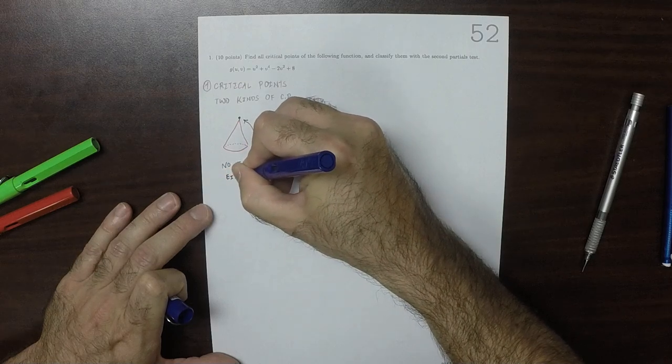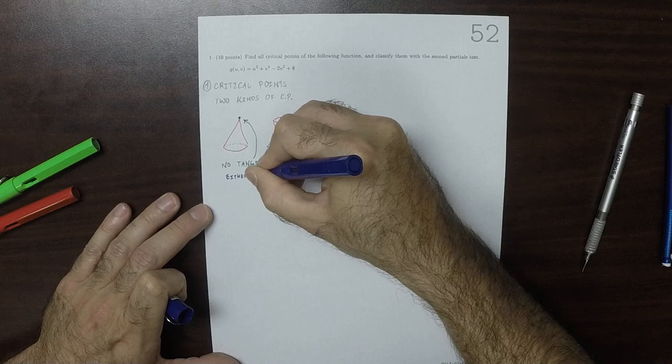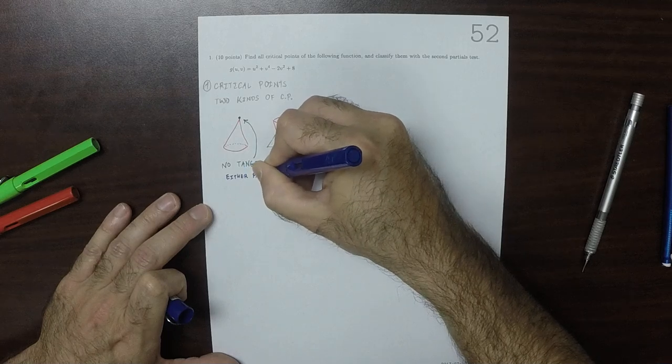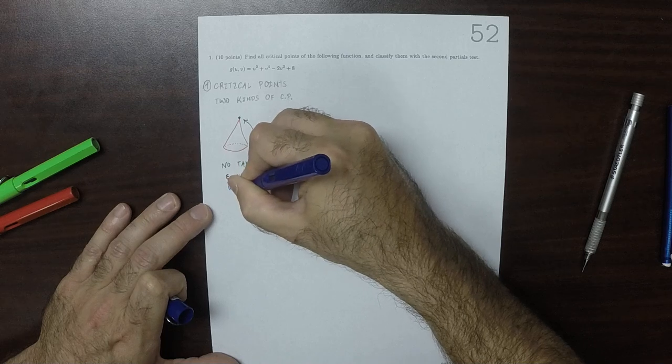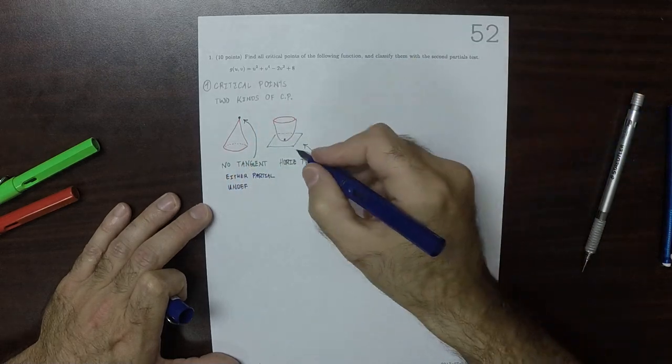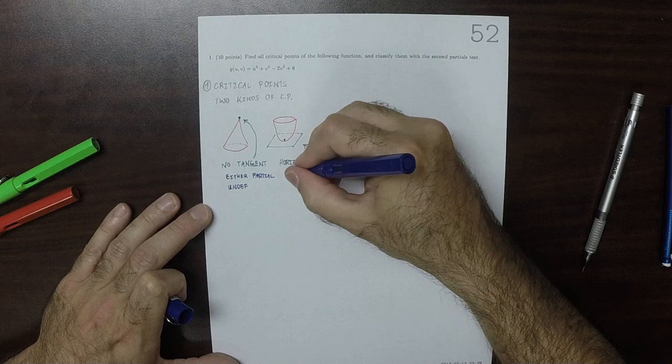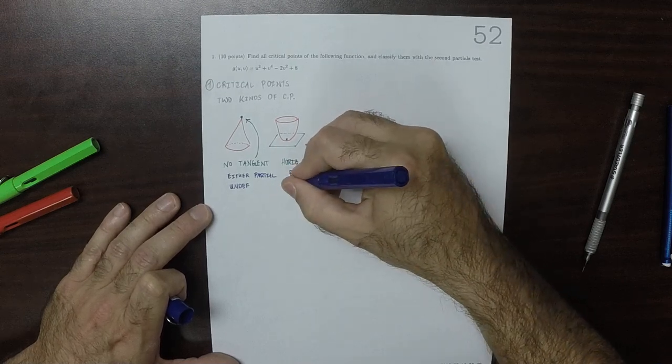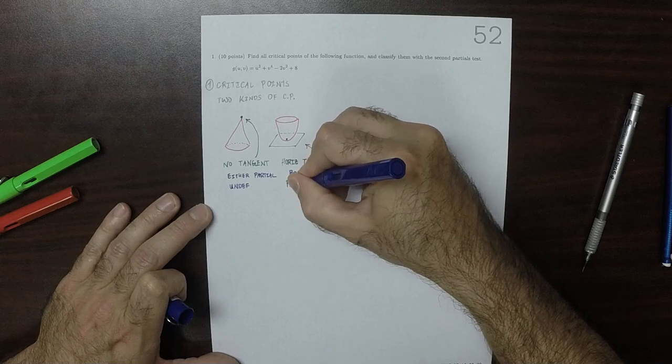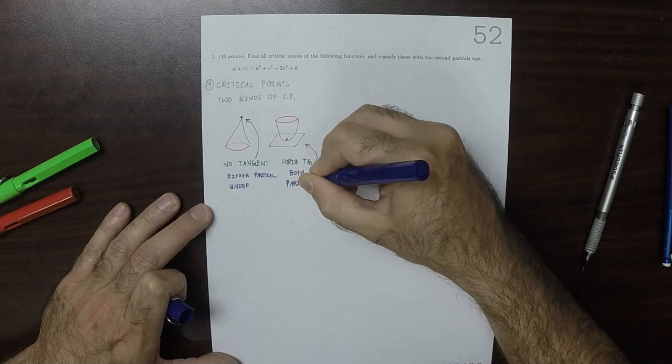either partial is undefined or both. And this kind means both partials are defined and zero.